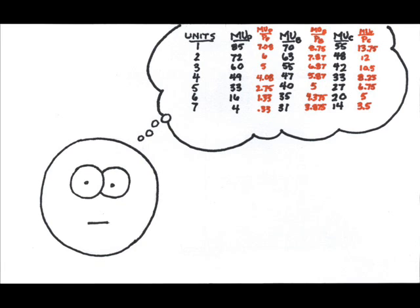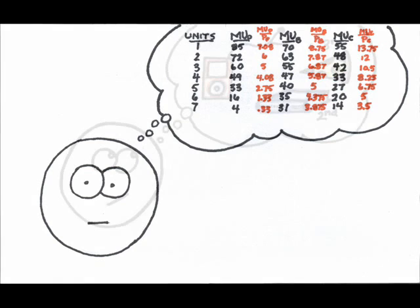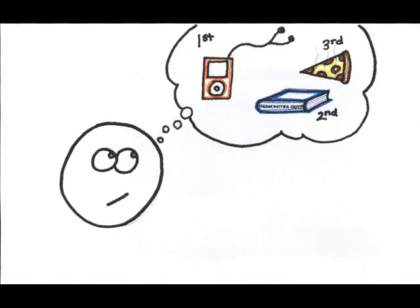There are three underlying assumptions to indifference curve analysis. I'm not going to test you on these, but I will occasionally refer back to them. Assumption number one says that consumers can rank preferences. And all this really means is that you know what you like. You can put goods and services in order of the most preferred to the least preferred.